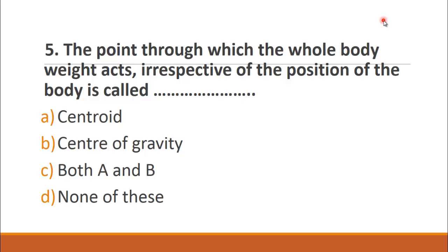MCQ number five is: The point through which the whole body weight acts irrespective of the position of the body is called? The choices are A. centroid, B. center of gravity, C. both A and B and D. none of these. Center of gravity is the point on which the whole weight of the body acts, so the right choice for this question is B. center of gravity.